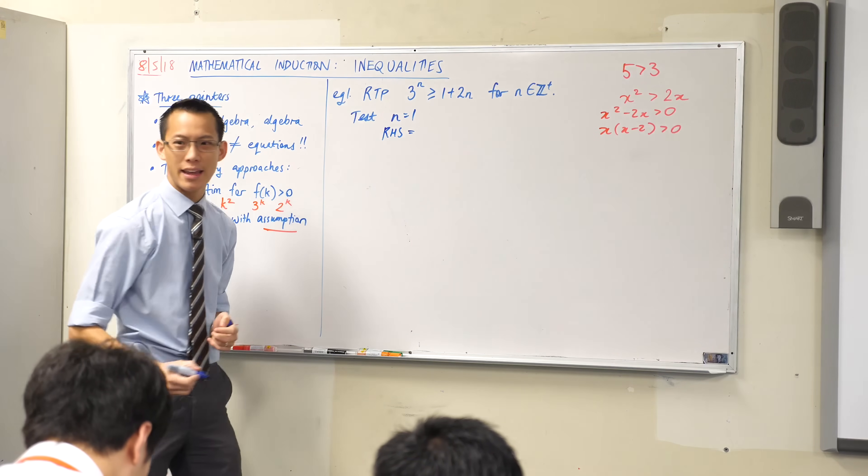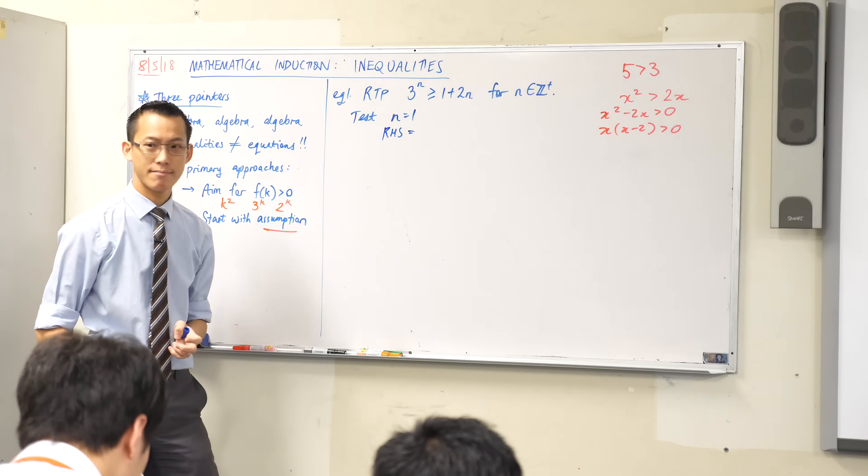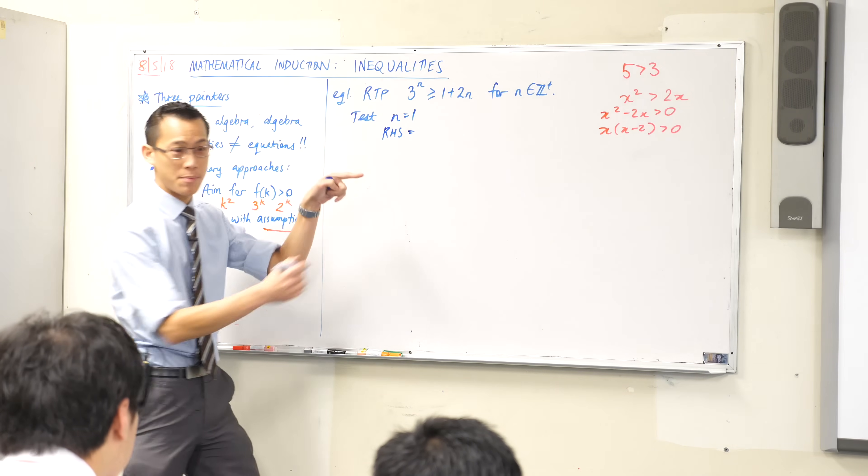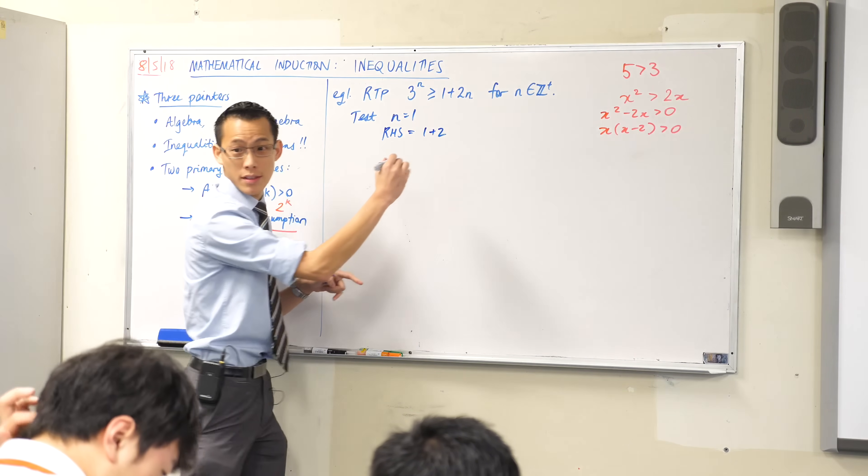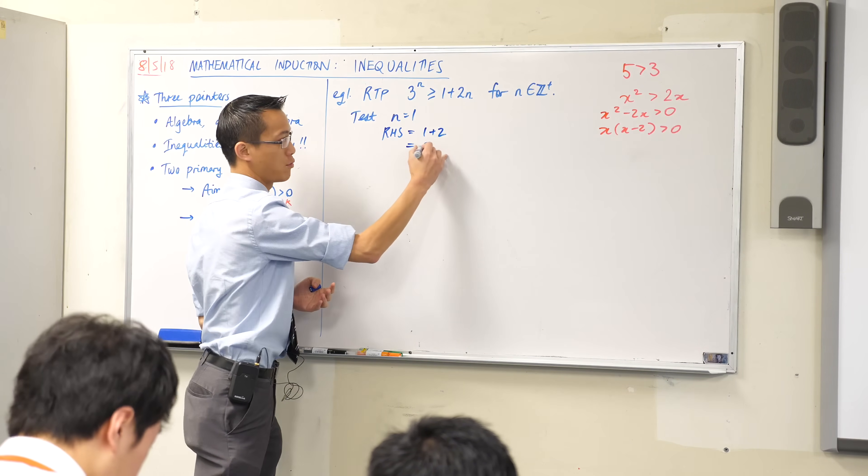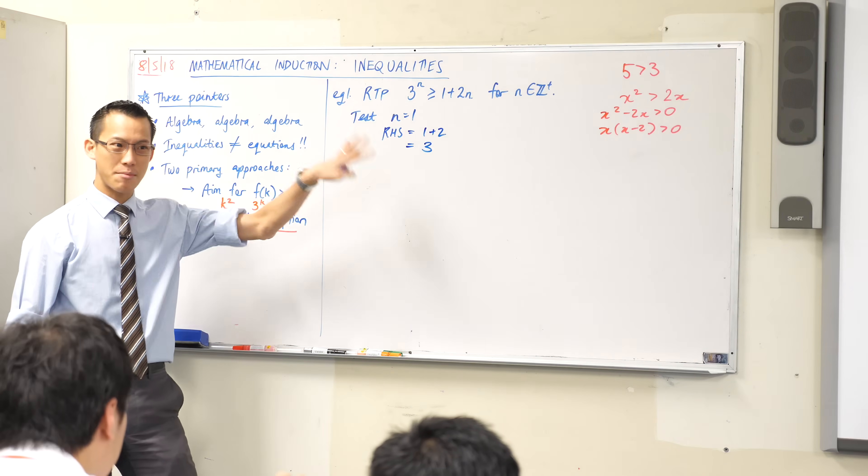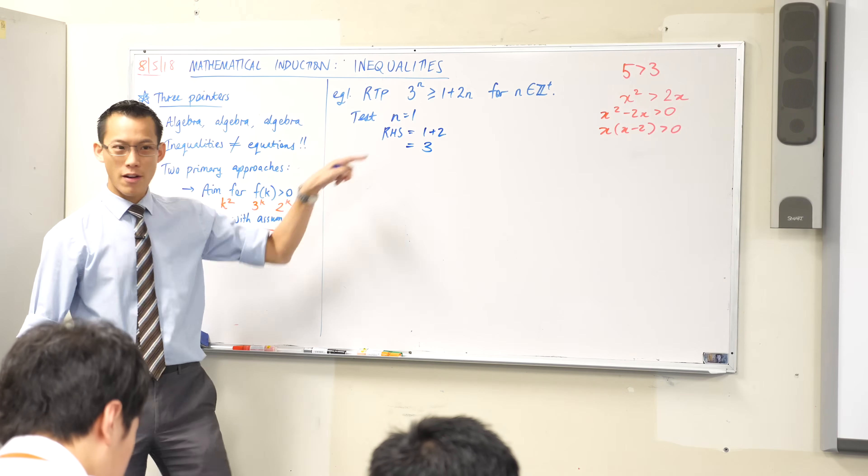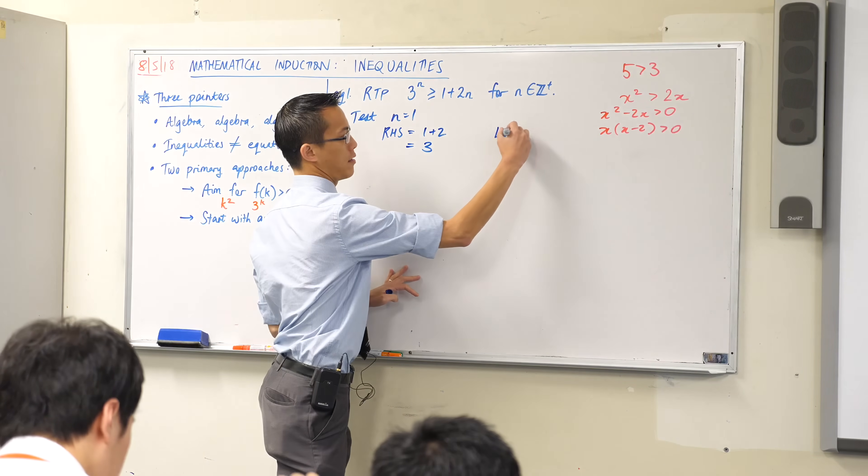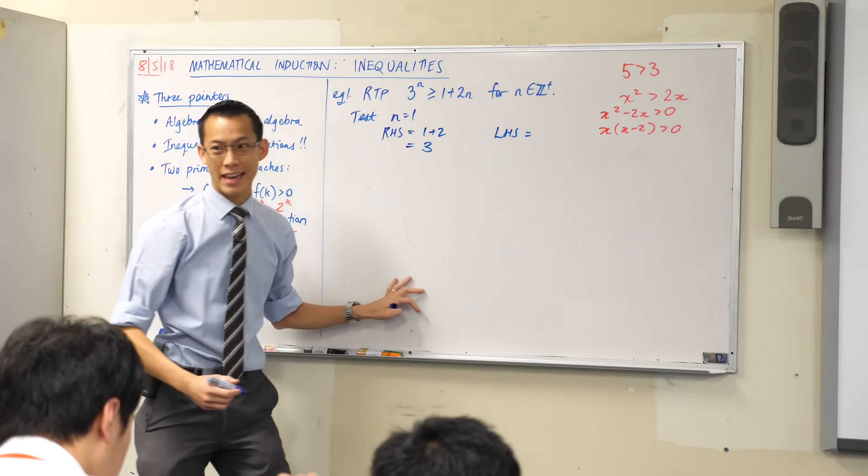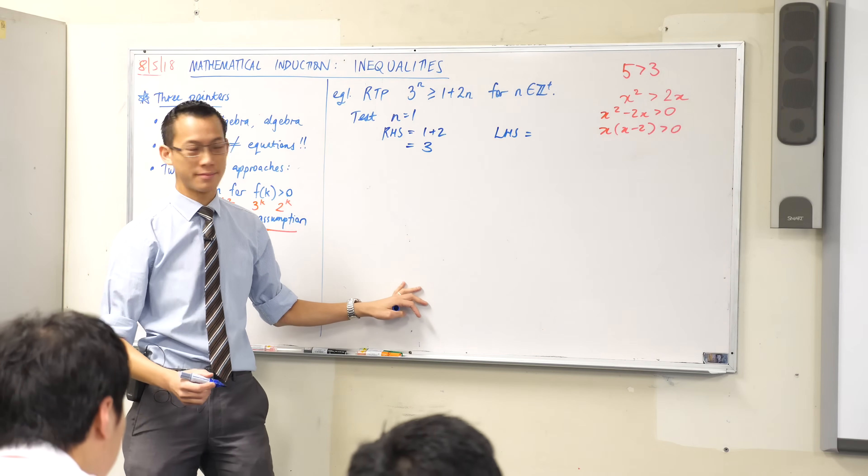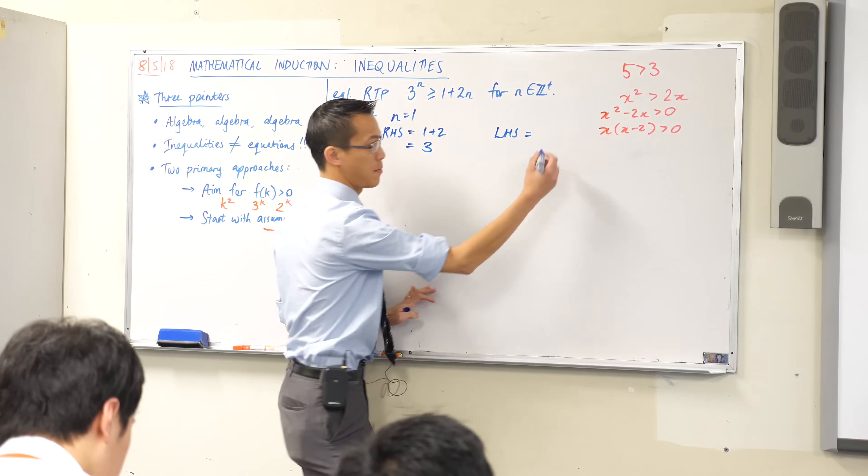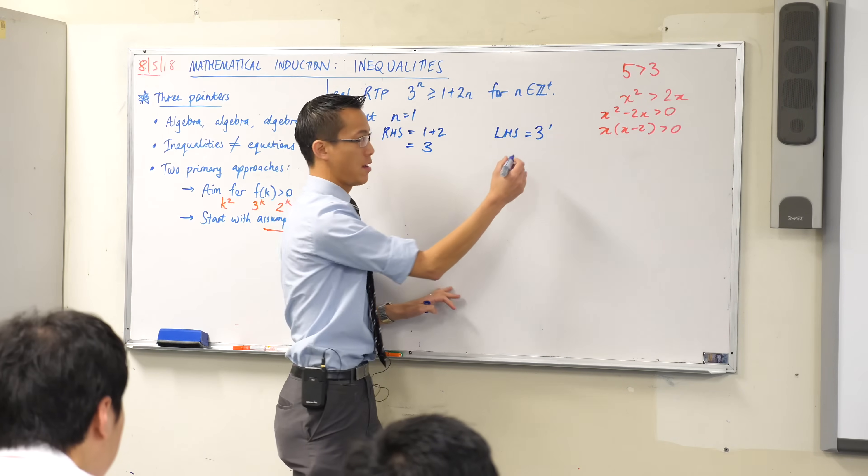I'm actually gonna start with the right-hand side for a reason. It will become clear in about 60 seconds time. What is the right-hand side when n equals 1? It's gonna be 3, but don't forget you actually have to prove that this is the case. I'm gonna work the simple numbers there and get my value.